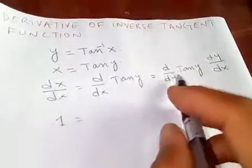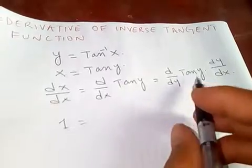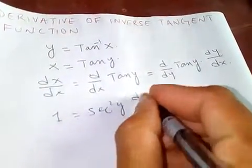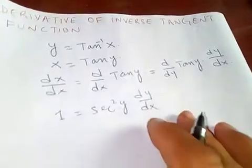We get one here, and differentiation of tan is secant square y dy by dx.